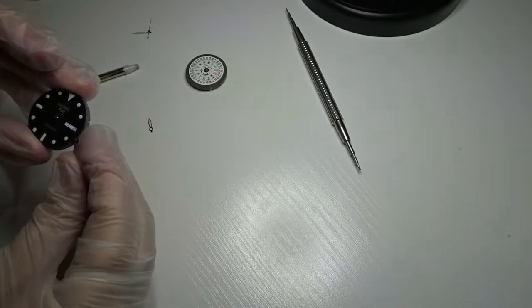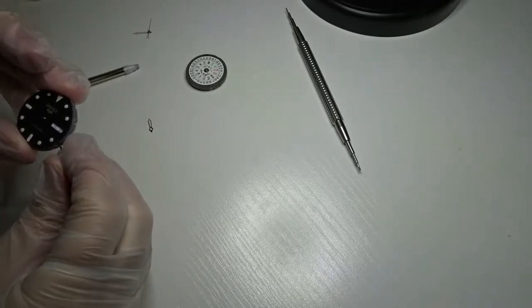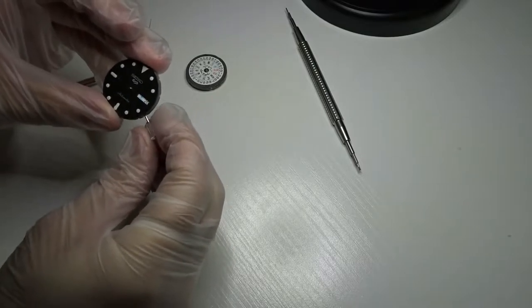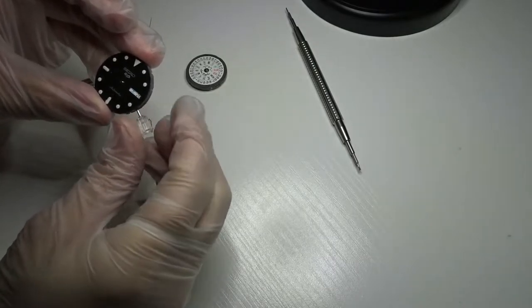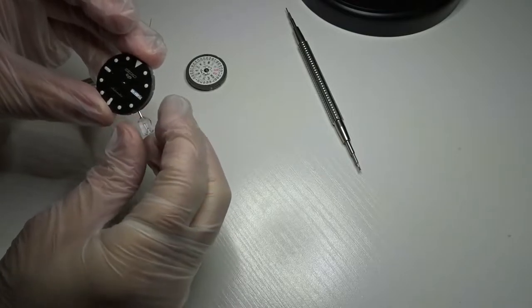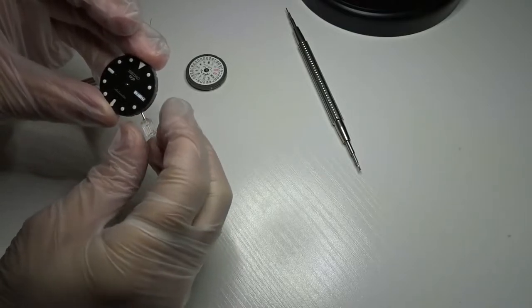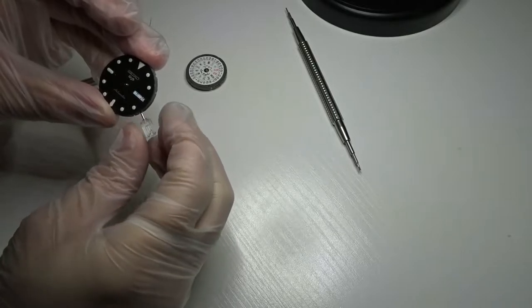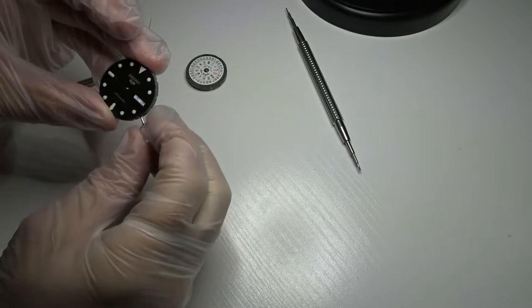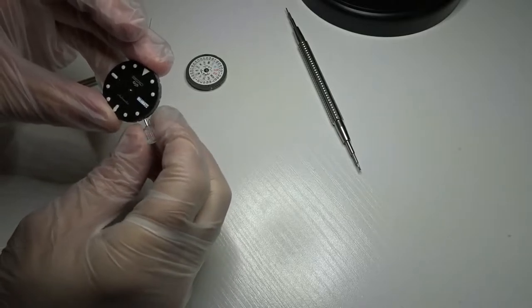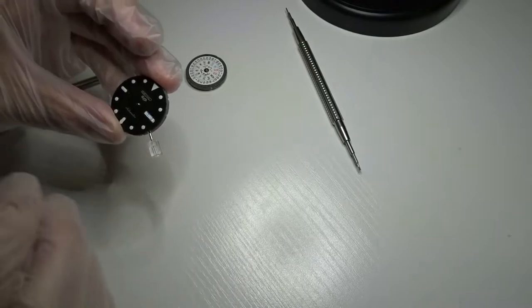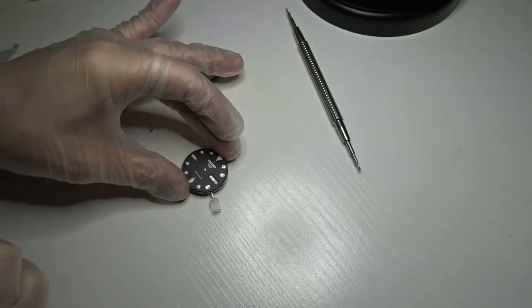So in order to prepare for applying the hour and minute hand, it's important that you get the movement to where it does the date change, because that'll tell you that that's 12 o'clock. So the date just changed there, so now I know that I can put the hour hand on the post and it just needs to line up with the 12 o'clock indice.